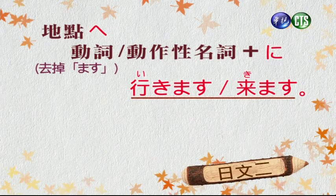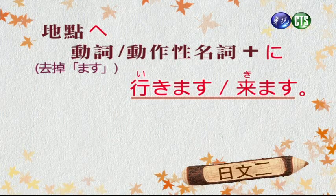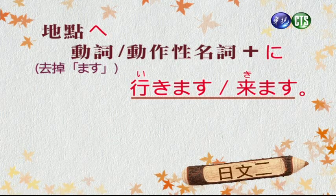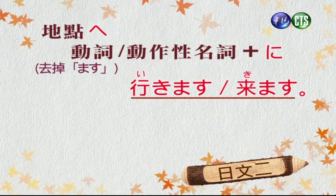後面加上移動性的行きますまたはきます等動詞。這個地方請同學特別留意，就是地點要用へ，表示去的方向，因為搭配後面的行きますまたはきます來的。那麼我們來看這個例句。